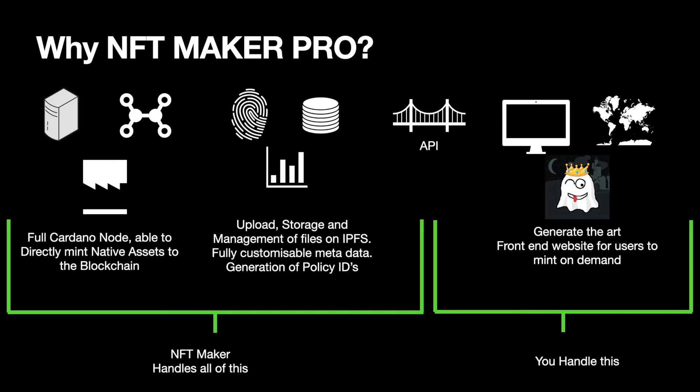Along the bottom rail here I've split these parts into what you have to do versus what NFT Maker Pro handles. The first thing I want to stress is they are essentially letting you use their Cardano node to directly mint native assets on the blockchain. This is huge — you don't have to set up a Cardano node, you don't have to download the entire Cardano transaction ledger, because they're handling that for you. Only Cardano nodes can mint NFTs, so if you weren't using NFT Maker Pro you would have to handle that yourself.